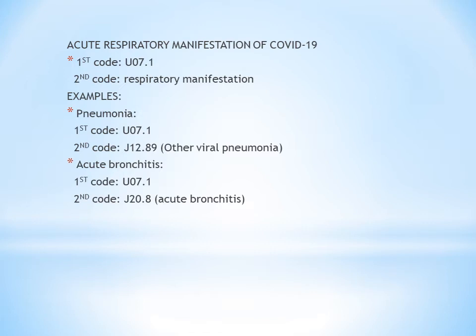For example, the first manifestation is pneumonia. If the patient is COVID-19 positive and is having pneumonia due to COVID-19, you first code U07.1 for COVID-19 and secondly code for pneumonia. Similarly, the next example is acute bronchitis, which is also a respiratory manifestation of COVID-19. If the patient is having acute bronchitis due to COVID-19, first code for COVID-19 and secondly code for acute bronchitis, J20.